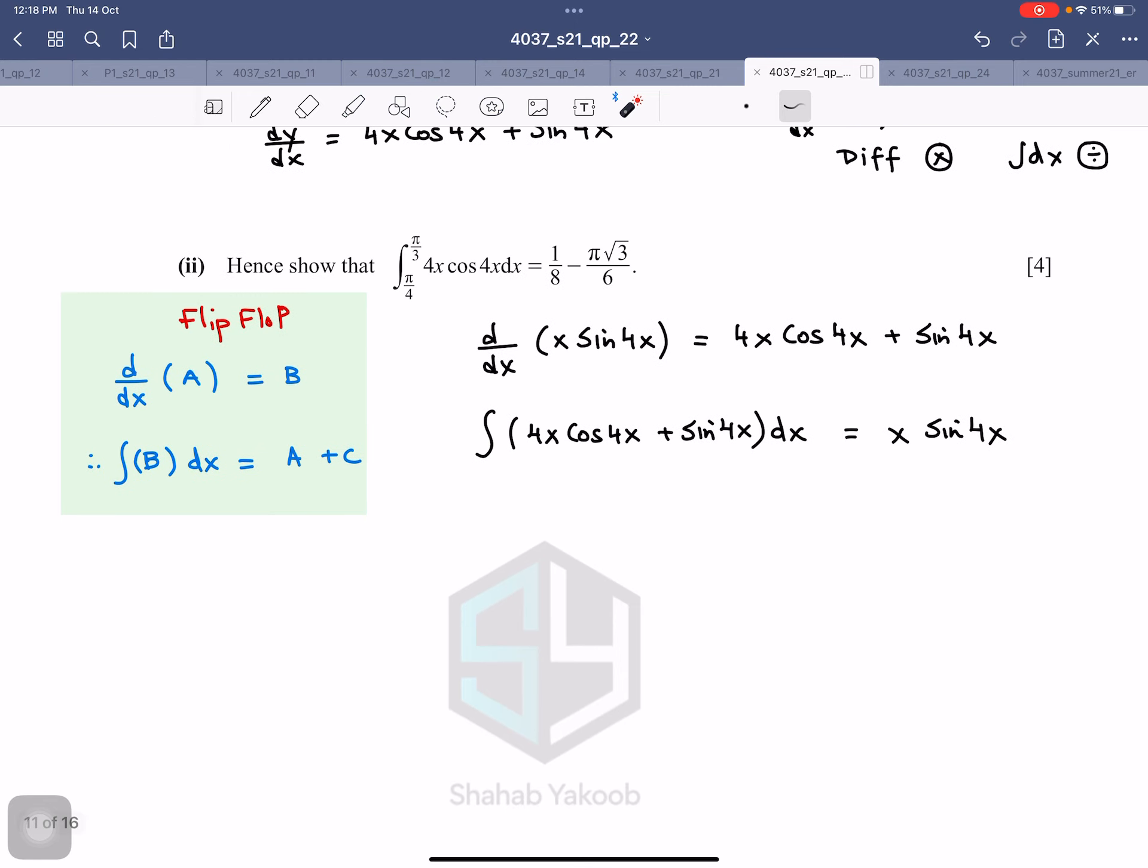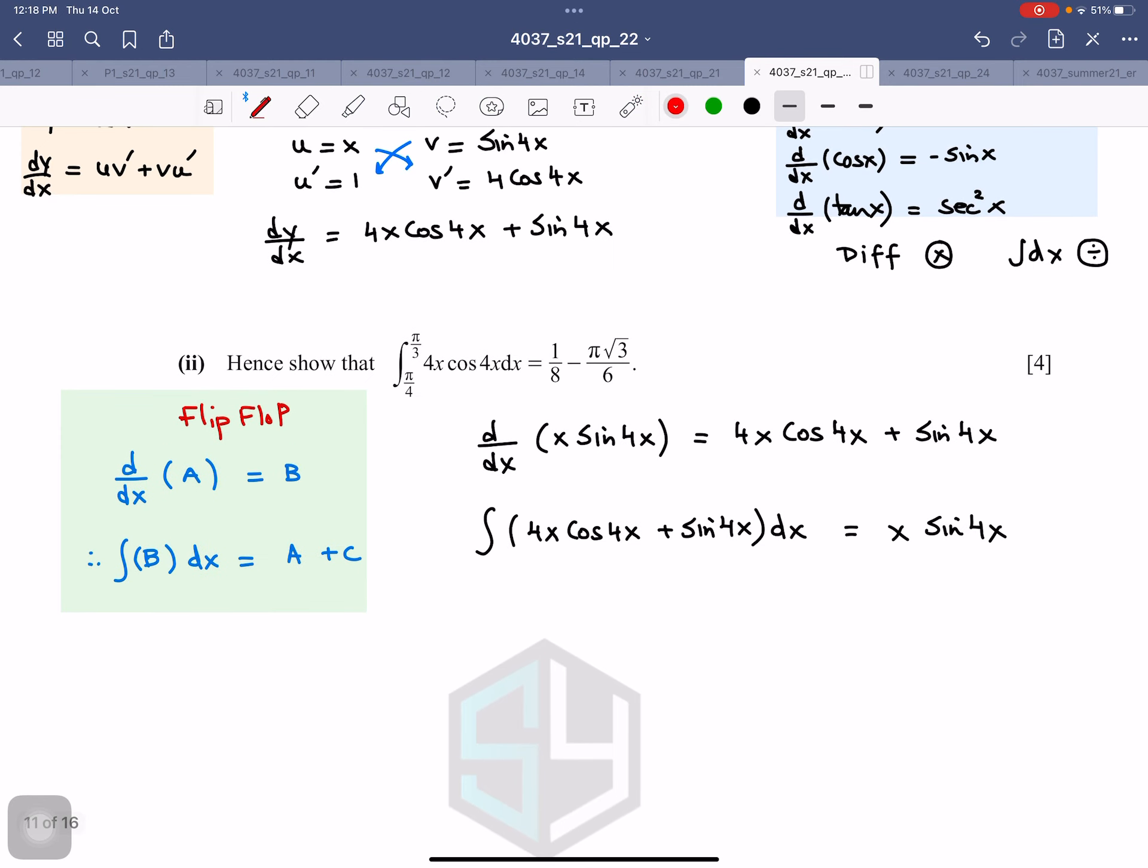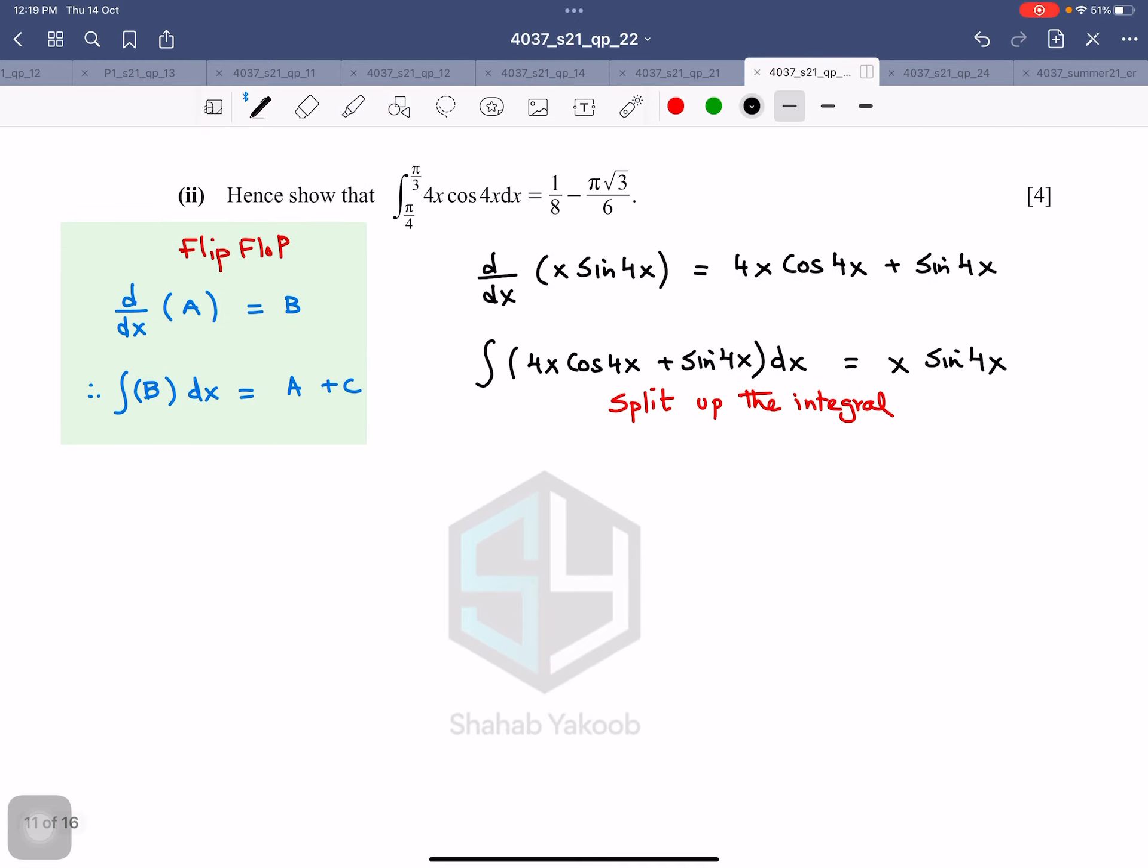Now, I cannot integrate this thing directly. This cannot be integrated directly. This you will do in A-level second year, in P3. And this integration technique is called integration by parts. But of course, you cannot do it right now. So what will you do? Split up this integral. Split up the integral. And what cannot be integrated, that will be made the subject.